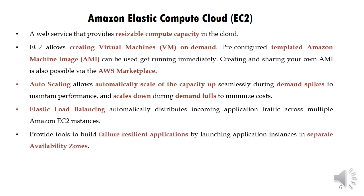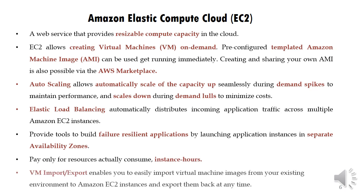Elastic load balancing automatically distributes incoming application traffic across multiple Amazon EC2 instances. It provides tools to build a failure-resilient application by launching application instances in separate availability zones. You pay only for resources actually used. VM import and export enables you to easily import virtual machine images from your existing environment to Amazon EC2 instances and export them back at any time.